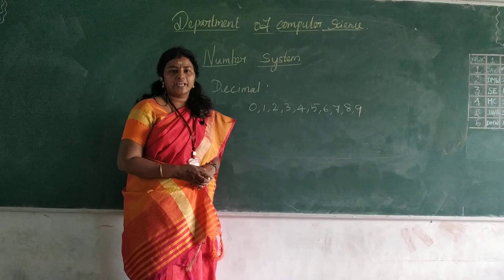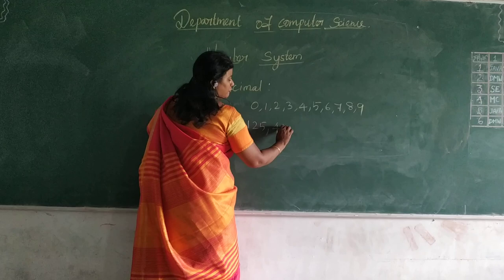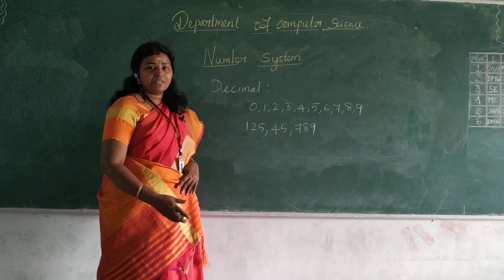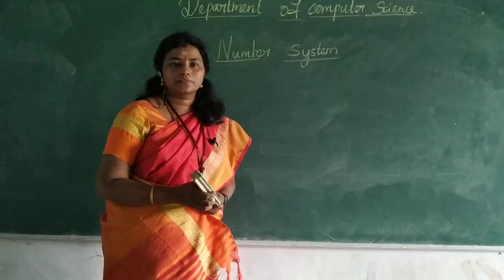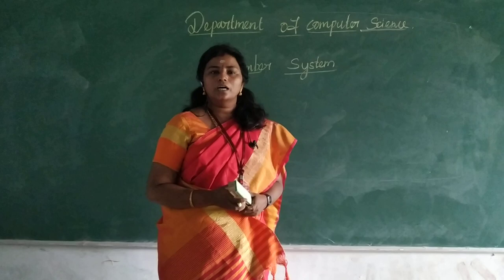For example, 1, 25, 45, 7, 8, and 9. Likewise, we can represent any values. So computers use 4 different types of number system.